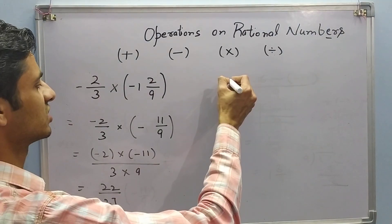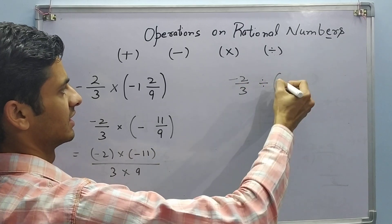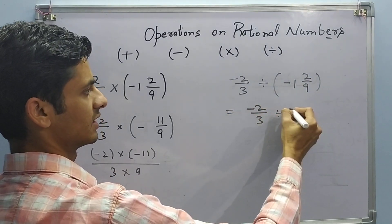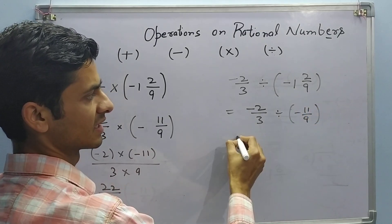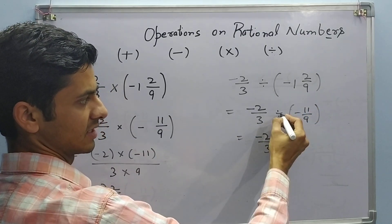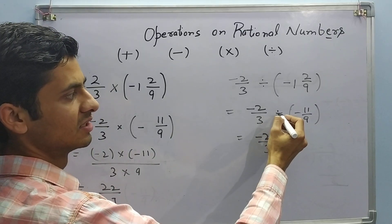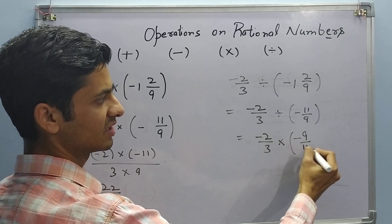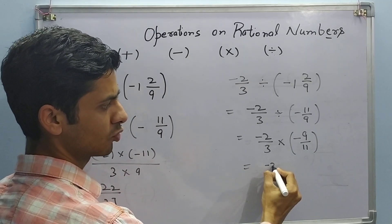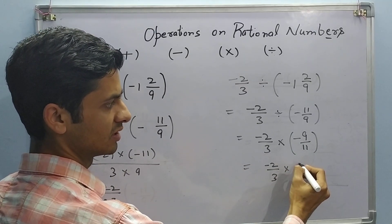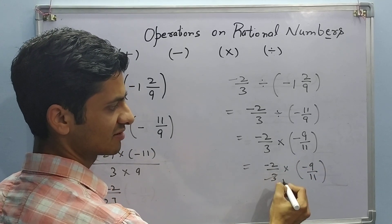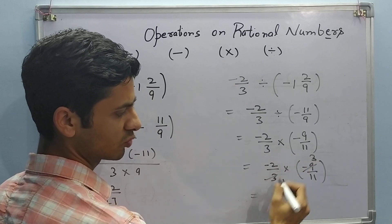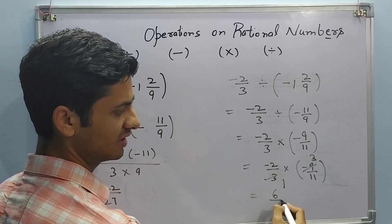Now suppose we want to do the division. Negative 2 upon 3 divided by negative 1 whole 2 upon 9. So it comes out to be negative 2 upon 3 divided by negative 11 upon 9. Negative 2 upon 3, when you are dividing, in the last video you came to know that meaning of this division is just multiplying by its additive inverse. So it becomes negative 2 upon 3 into negative 9 upon 11. And 3 1s are 3, 3 3s are 9. And negative sign was also there. So negative 2 into negative 3 comes out to be 6, and 1 into 11 is 11.